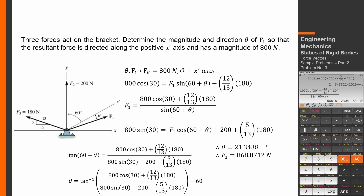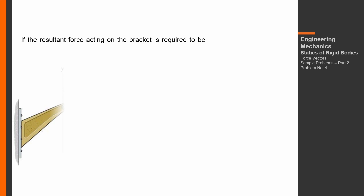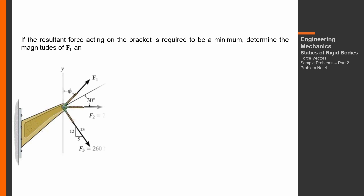Those are the final answers. Problem number 4: if the resultant force acting on the bracket is required to be a minimum, determine the magnitudes of F1 and the resultant force, where the given phi equals 30 degrees.